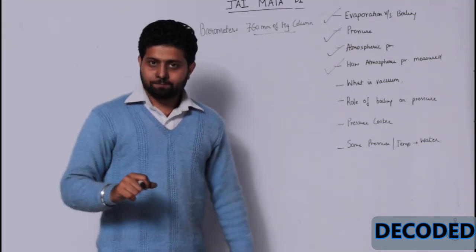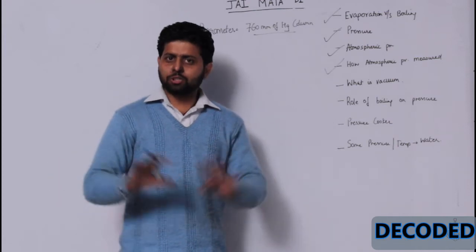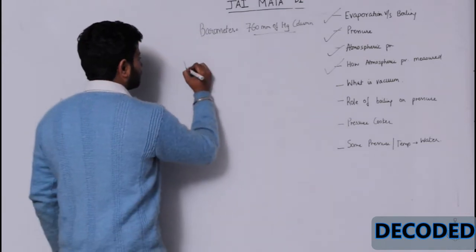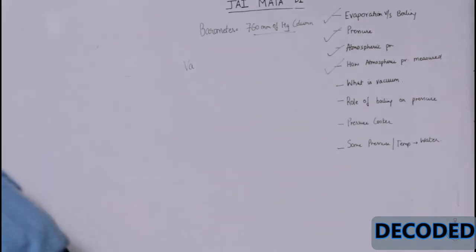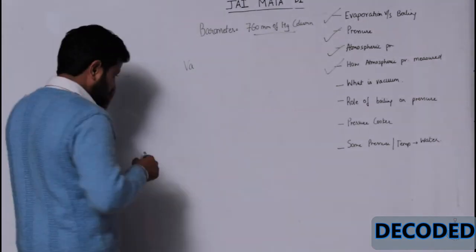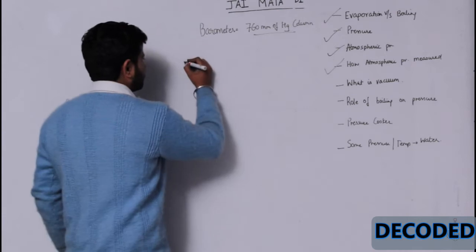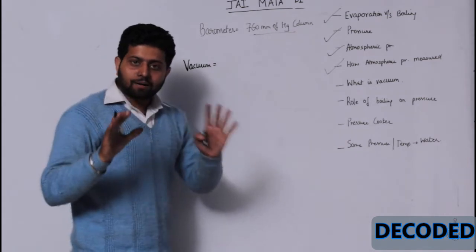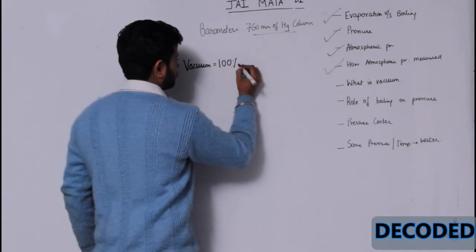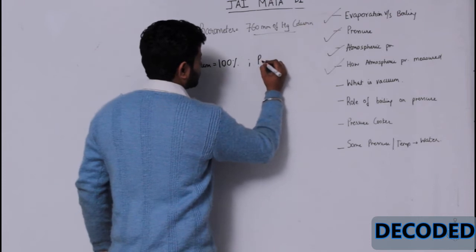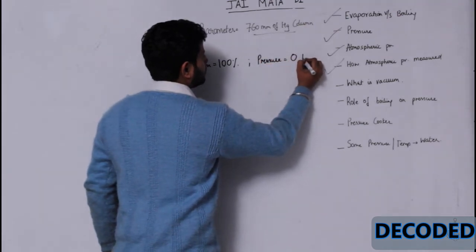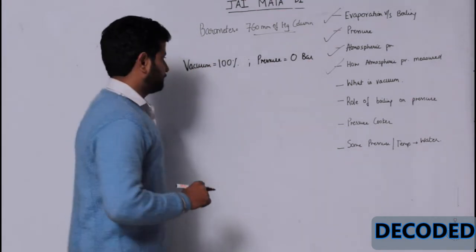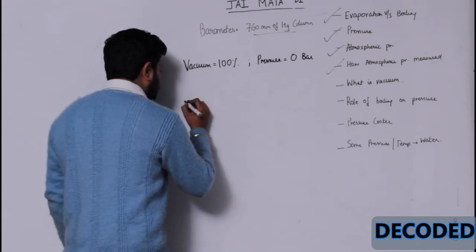Now let us start with basics. When we go in space, there is no air, no atmosphere, nothing there. There is vacuum. Vacuum means nothing. So at that time when we go in space, you have 100 percent vacuum. The pressure is zero bar.